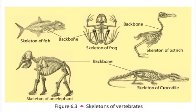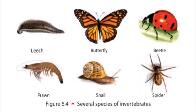I have given you skeletons of different animals. Identify the nature of the backbones of these animals: a skeleton of fish, skeleton of frog, skeleton of ostrich, elephant, and crocodile. They are different in their backbones. Some animals do not have a backbone. These animals are called invertebrates — that means they don't have a backbone. Examples include leech, butterfly, beetle, prawn, snail, and spider.